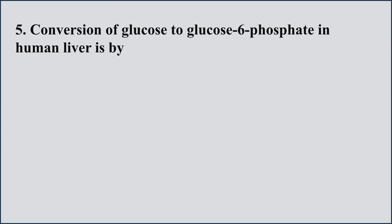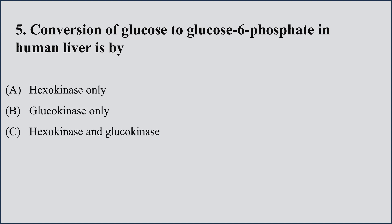Question number 5: Conversion of glucose to glucose-6-phosphate in human liver is by: A) hexokinase only, B) glucokinase only, C) hexokinase and glucokinase, D) glucose-6-phosphate dehydrogenase. The right option is C, hexokinase and glucokinase. As soon as glucose enters the cell via blood transporters, it is trapped by phosphorylation.